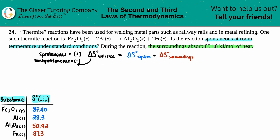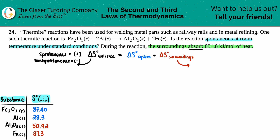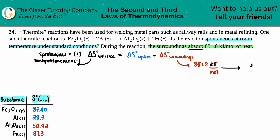There are two components: the system — what we're actually studying — and the surroundings. The problem states that the surroundings absorb 851.8 kilojoules per mole of heat, so that value must come from 851.8 kJ/mol. However, these units are not delta S units. Standard delta S values are in joules per mole times kelvin, so we need to convert from kilojoules per mole to joules per mole·kelvin.